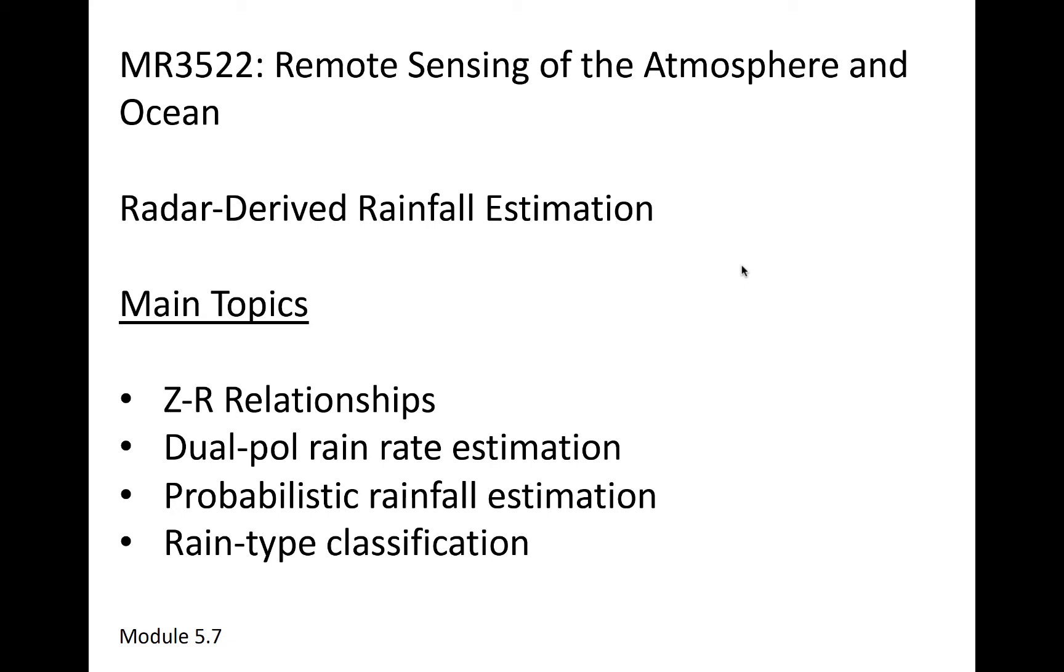This module will introduce some aspects of rainfall estimation via radar, with a particular emphasis on converting radar variables, including radar reflectivity factor and other dual-polarimetric variables, to rain rate.